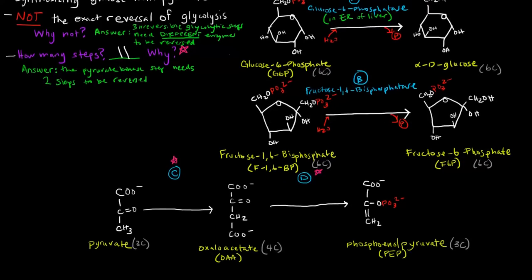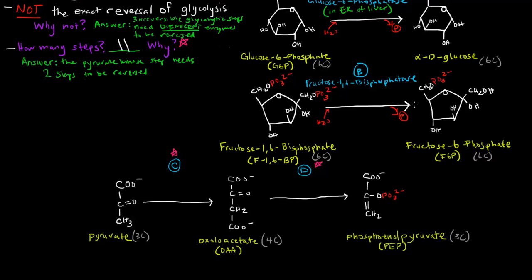The other two steps involve reversing the pyruvate kinase step. Going from phosphoenolpyruvate to pyruvate was one step in glycolysis, but getting from pyruvate back to phosphoenolpyruvate requires two steps. The reason is that the pyruvate kinase step was highly exergonic — very spontaneous, releasing a lot of energy — so in order to reverse it, we have to input energy and go through two steps.